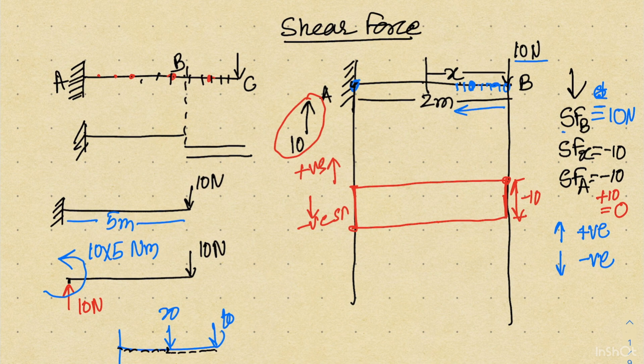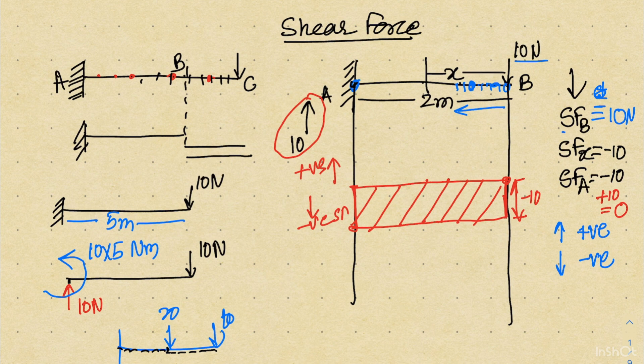You should understand that whenever you reach the fixed end, the shear force will by default return to zero. So even if you are not calculating the reaction, you have to make the closed diagram. This is ultimately the shear force diagram of the given beam. I hope you now have a basic understanding.